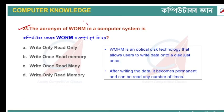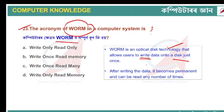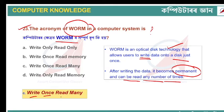Next, the acronym of WORM (W-O-R-M) in a computer system is: Write Once Read Many. In this technology, you can write data to a disk only once — once written, the data becomes permanent and cannot be modified or deleted. However, you can read the data from the disk many times.